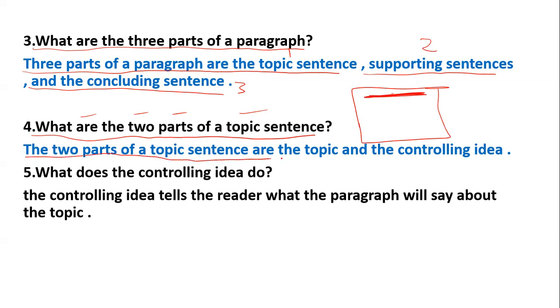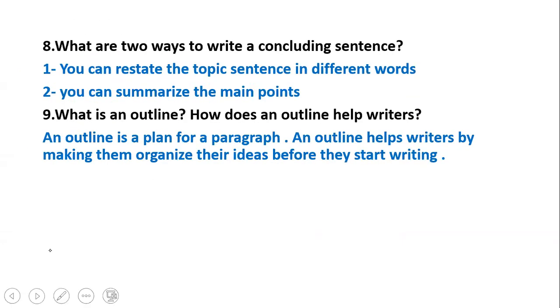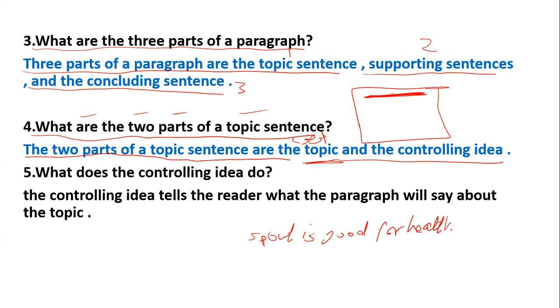The two parts of the topic sentence are the topic and the controlling idea. For example, sports is good for health for five reasons. Topic: Sports. Controlling idea: what divides the paragraph into several points.